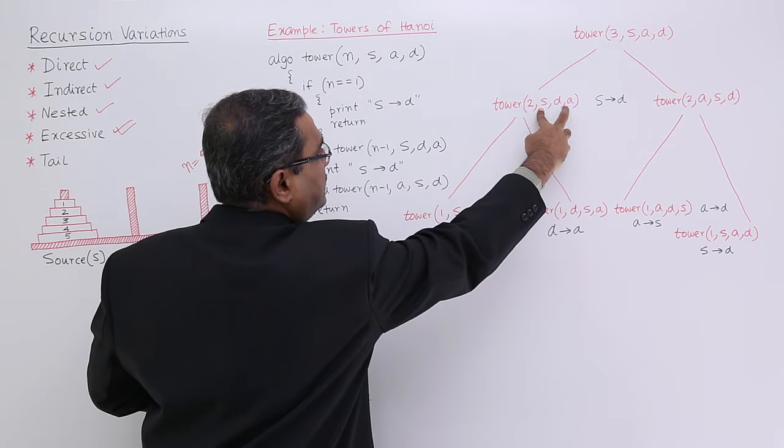Please practice this yourself to gain full confidence. In your exam, write this algorithm along with the recursion tree and the particular outputs. That is the second example I have discussed for the excessive recursion type. In the next video, we shall cover tail recursion — what it is and its respective examples. Please watch that video as well, since it is a continuation of this topic on recursion variations. Thanks for watching.